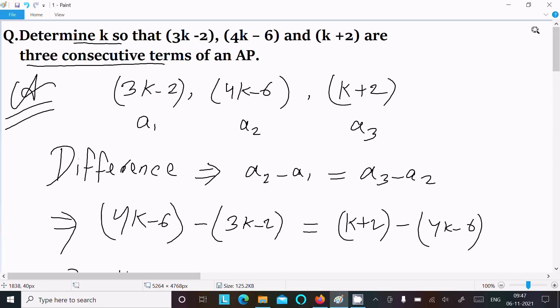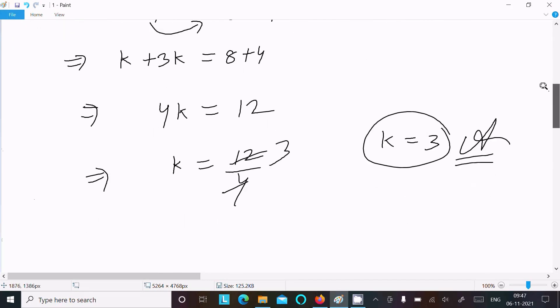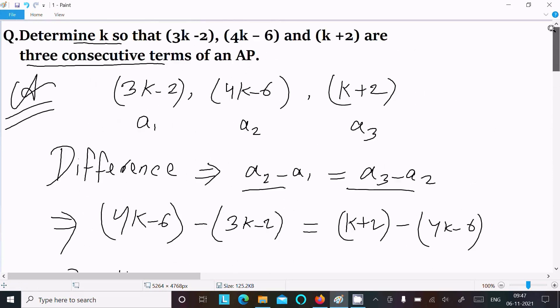Let me repeat: write all terms—first term, second term, third term. Three terms are consecutive, so the difference of the terms is the same. Second term minus first term equals third term minus second term. Put the values and do the calculation. You get k equals 3. This is how we determine the value of k.